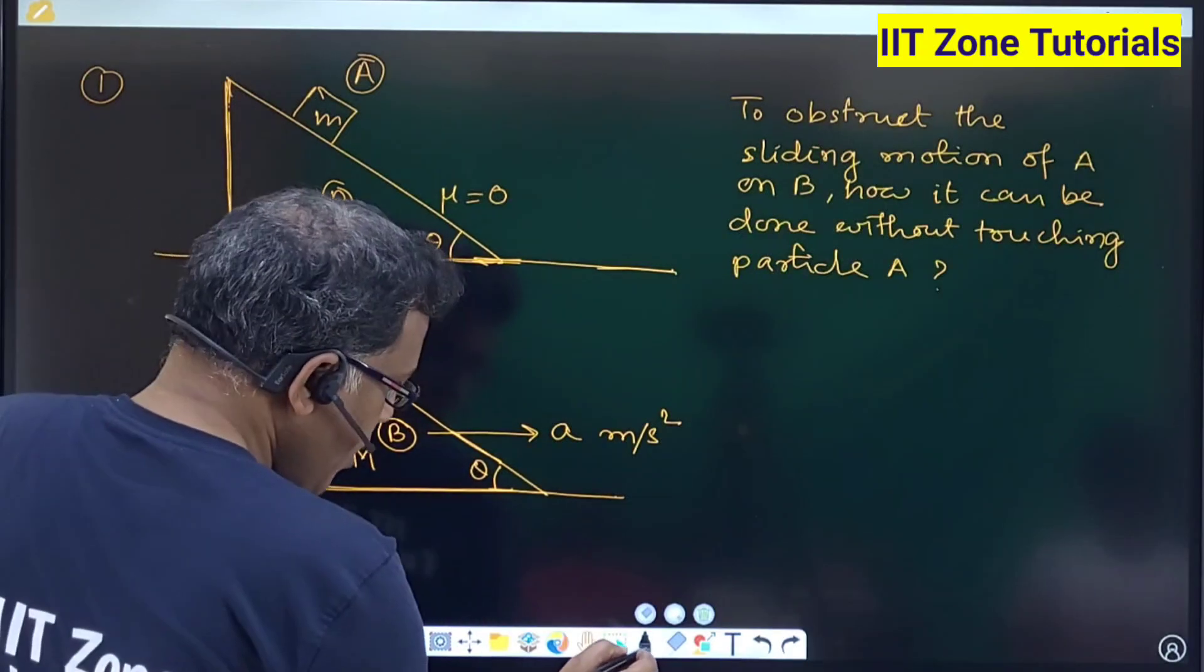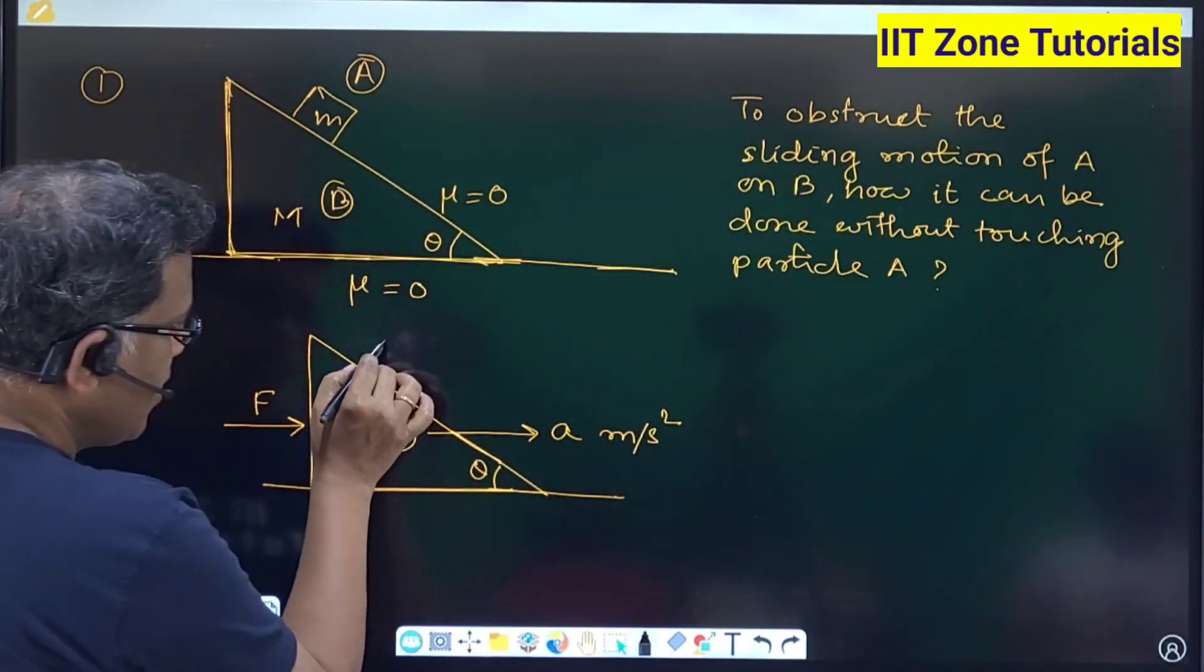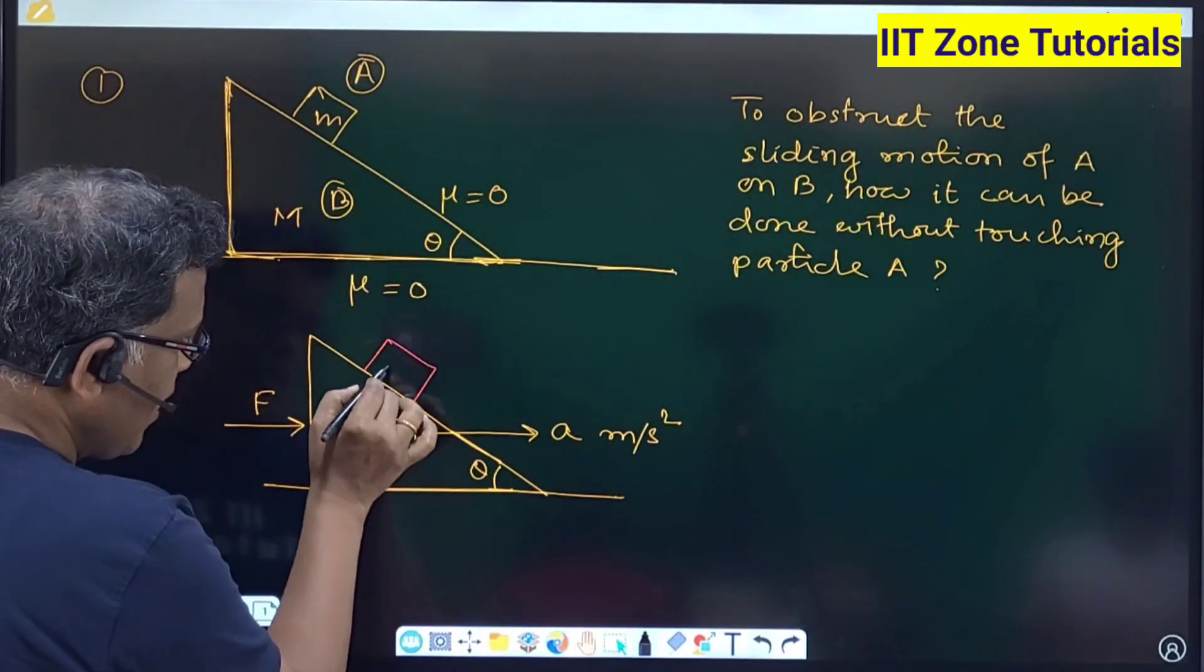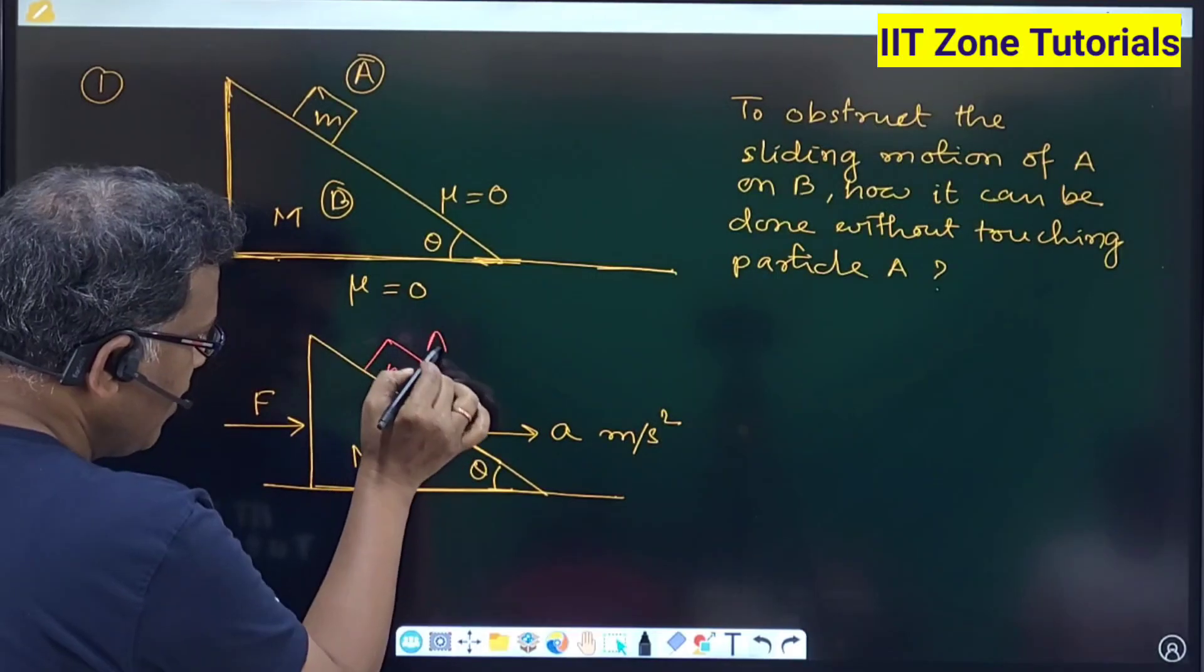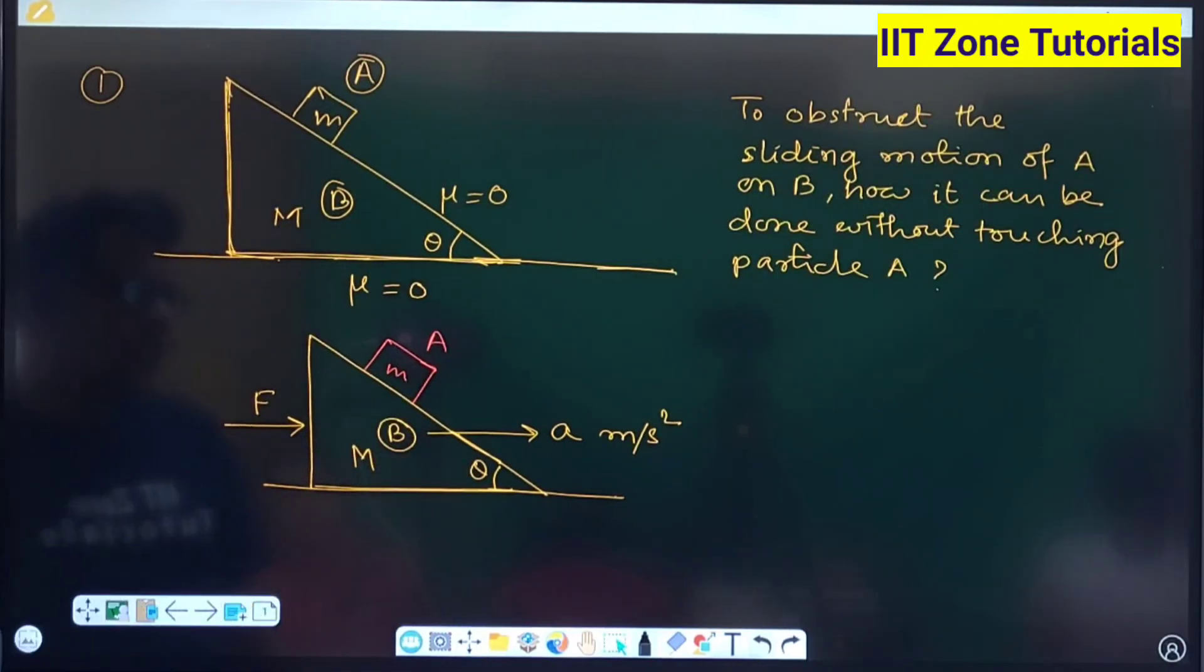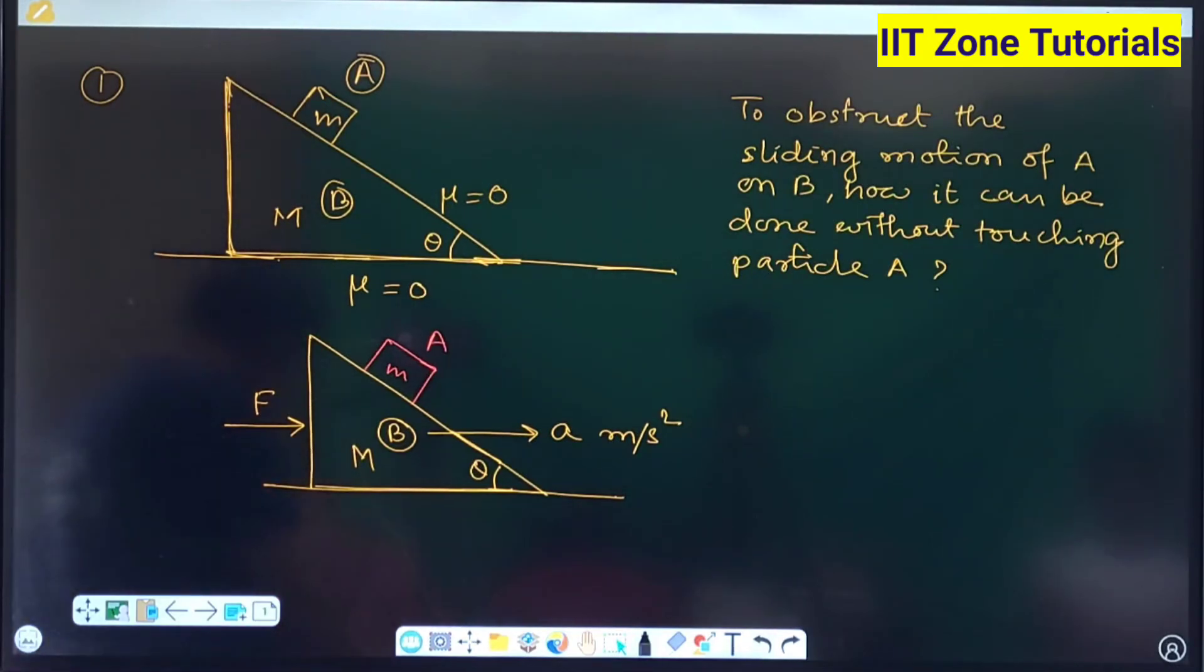Then what will happen? Now if you consider this is the mass M of particle A, so obviously once the particle A is found itself in contact with the non-inertial reference frame, so immediately it will